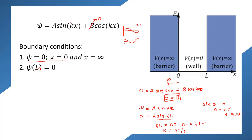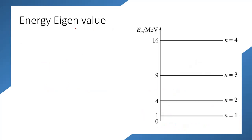From k = nπ/L, substituting back into our wave function, the final wave equation becomes ψ = A sin(nπx/L). This is the eigenfunction of the energy Hamiltonian.